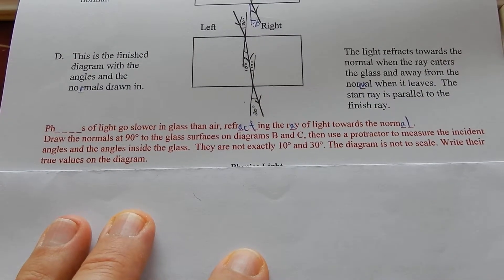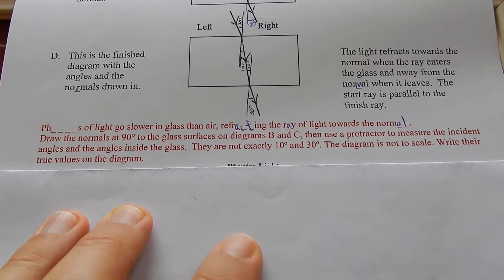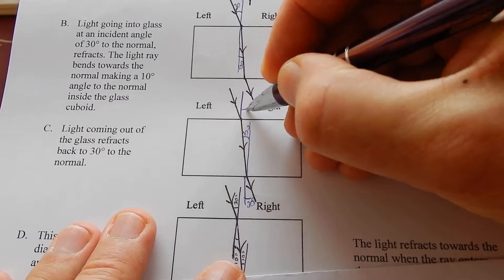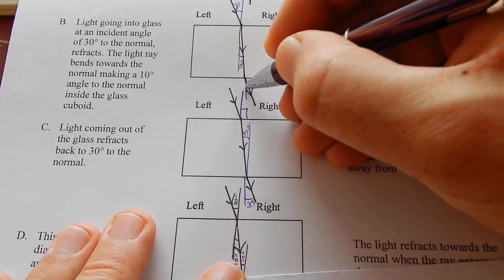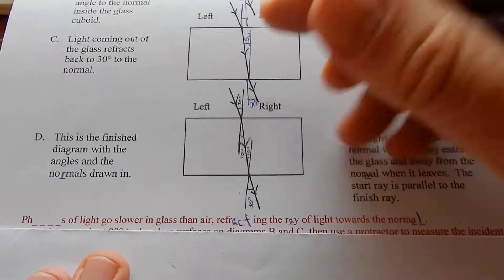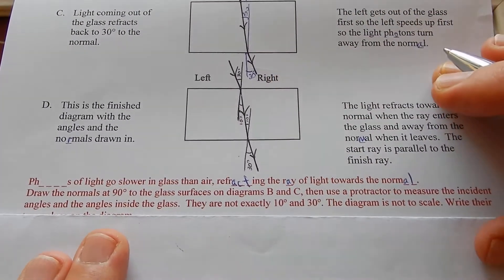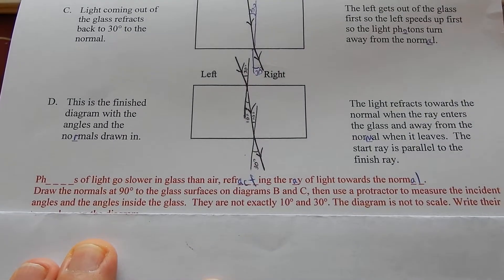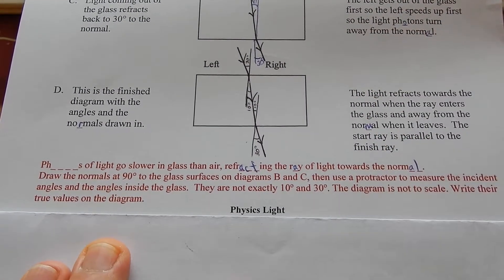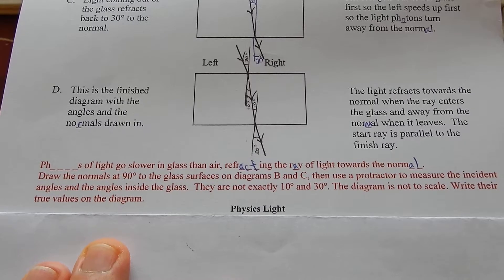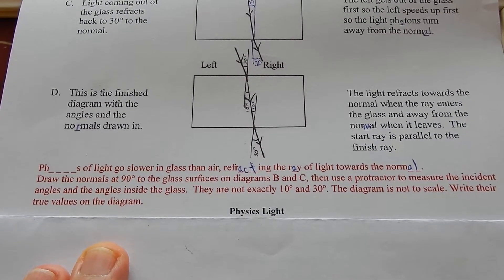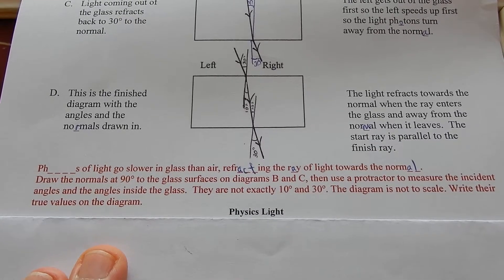Draw the normals at 90 degrees to the glass surfaces on diagram B and C. There's the normal. Then use a protractor to measure the incident rays and the angles inside the glass. They're not exactly 10 degrees and 30 degrees. The diagram is not to scale. Write their true values on the diagram. I'll leave that for my students to do when they're working on this.